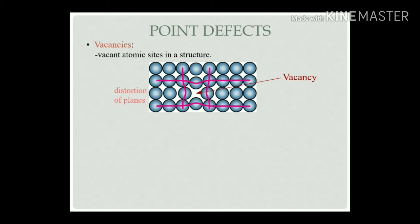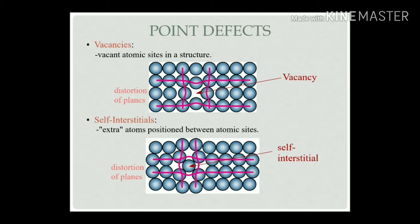The second point defect is self-interstitial, where one extra atom is positioned in between the perfect order structure. As the figure shows, one extra atom occupies space in the perfect order structure, making a defect or imperfection. That is called a self-interstitial kind of point defect. So in vacancy, atoms leave their own positions; in self-interstitial, one extra atom is added into the structure. Both leaving and addition always create imperfections in the structure.